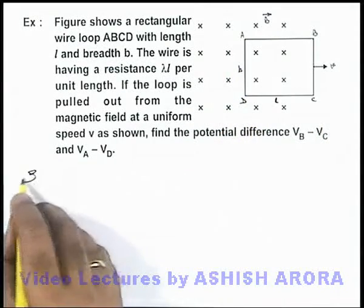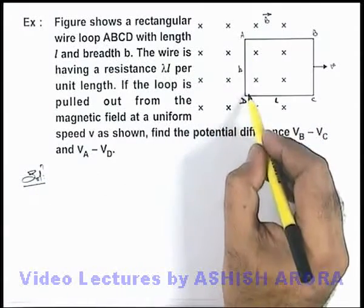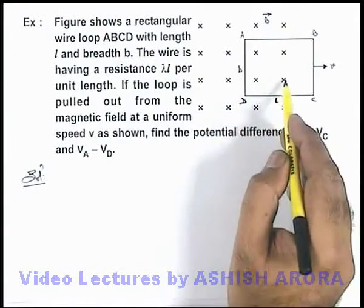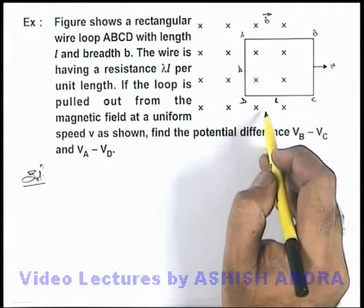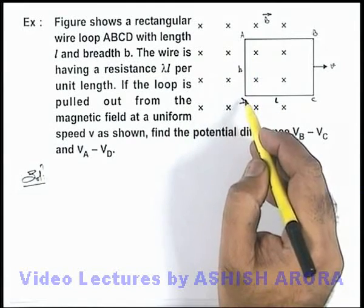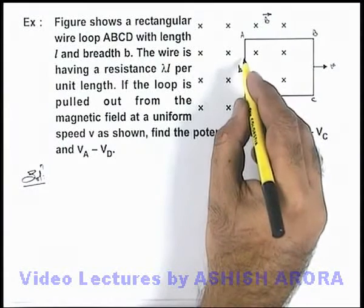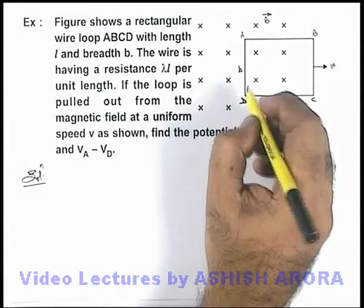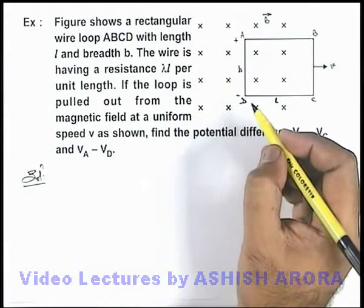In this situation, only wire AD is cutting the magnetic field lines. Wires AB and DC are not having any associated magnetic flux, so EMF will be induced only in wire AD. By using the right hand palm rule, we can see that free electrons will move toward end D, so A will be the high potential end and D will be the low potential end.